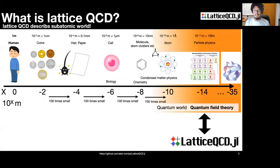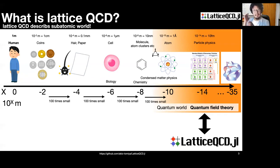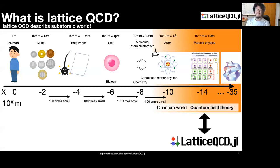What is quantum field? I don't have a short answer, but I explain where it is used. Description of physics depends on the scale. Our size is around 100 centimeters. For a hundred million times smaller world, we reach the subatomic world which is described by quantum field theory. Calculations of quantum field theory are necessary to understand our world, and we implement a code for that scale.